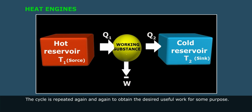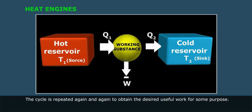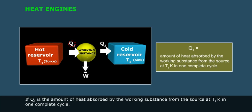The cycle is repeated again and again to obtain the desired useful work for some purpose. If Q1 is the amount of heat absorbed by the working substance from the source at T1 K in one complete cycle,